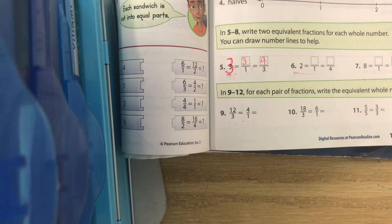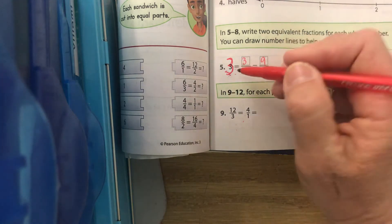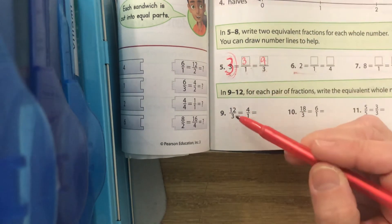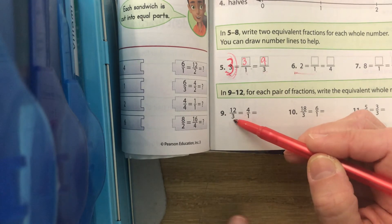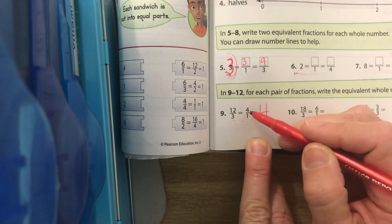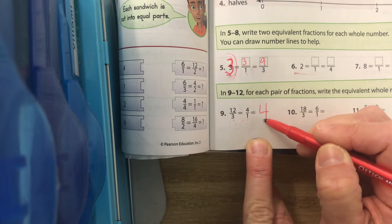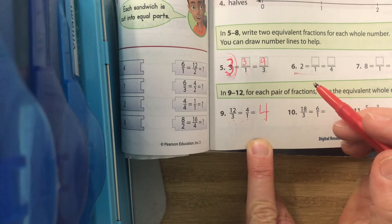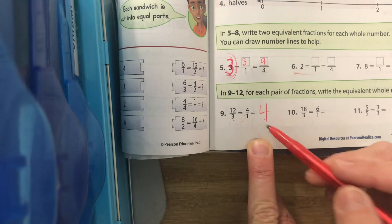So, 12/3 is what we have. They want to know, what is this whole number? We're kind of working backwards. What is 12 divided by 3? 4. And check it with this one. Is 4 divided by 1 also 4? Then we're great. 4 is your answer.